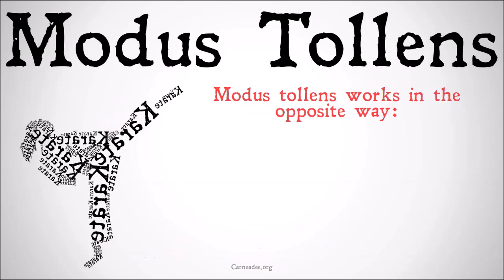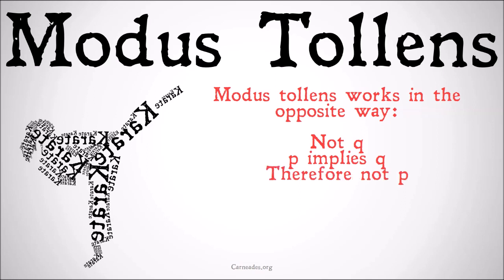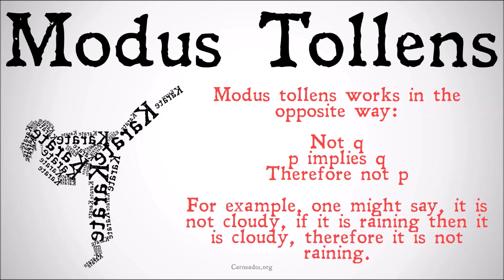Modus tollens, on the other hand, works the other way. We take as our first premise not Q. We take the same middle premise that P implies Q, and we conclude the opposite. Therefore, it's not the case that P. So one might say: 'It is not cloudy. If it's raining, then it must be cloudy. Therefore, it is not raining.' Check out the 100 Days of Logic for quick videos on how to use these different things in formal logical arguments.